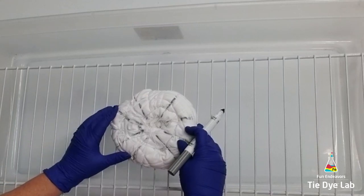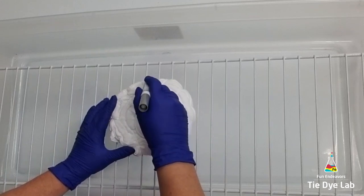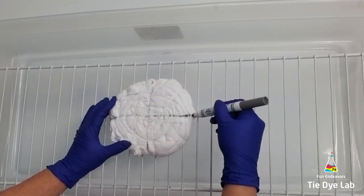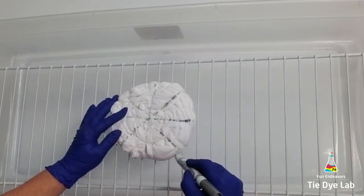I turned the shirt over and divided the back into eight equal sections. I'm going to dye every other section, so ultimately my goal is to try to leave half of the shirt white.